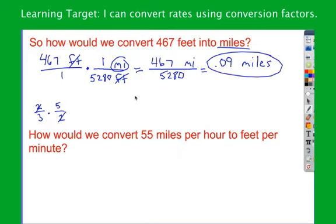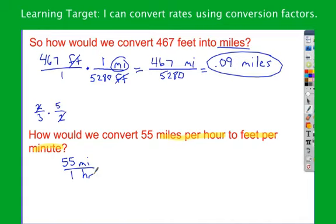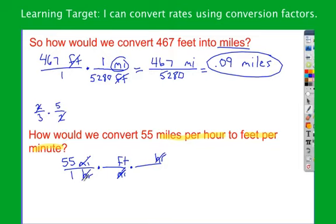We probably wouldn't use conversion factors for a problem that simple. Let's look at another example: 55 miles per hour — how many feet per minute is that? I start by writing my starting ratio: 55 miles over 1 hour. I want to get rid of miles and turn them into feet, and get rid of hours and turn them into minutes. Miles is in the numerator, so I put miles in the denominator to cancel it. I replace it with feet. I need another conversion factor to get rid of hours, so I need two conversion factors total: miles to feet and hours to minutes. Hours is in the denominator, so I put hours in the numerator, and replace it with minutes.